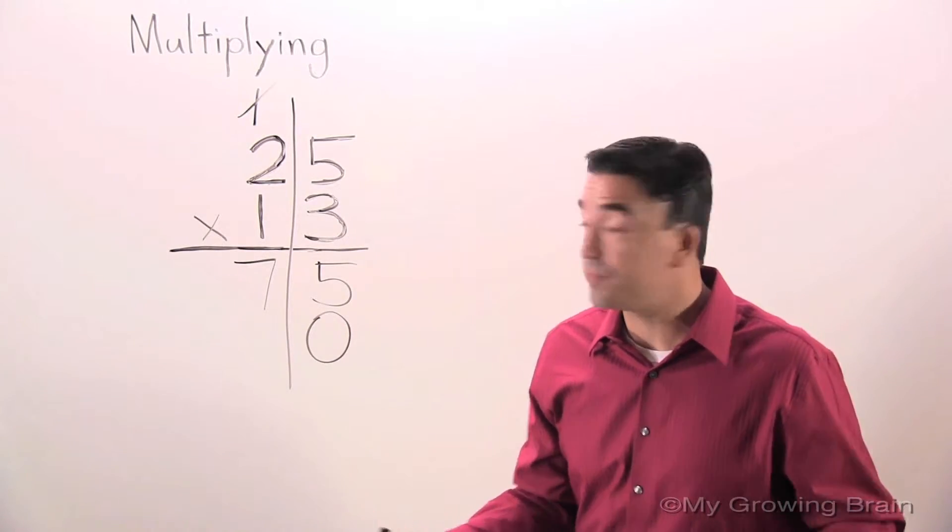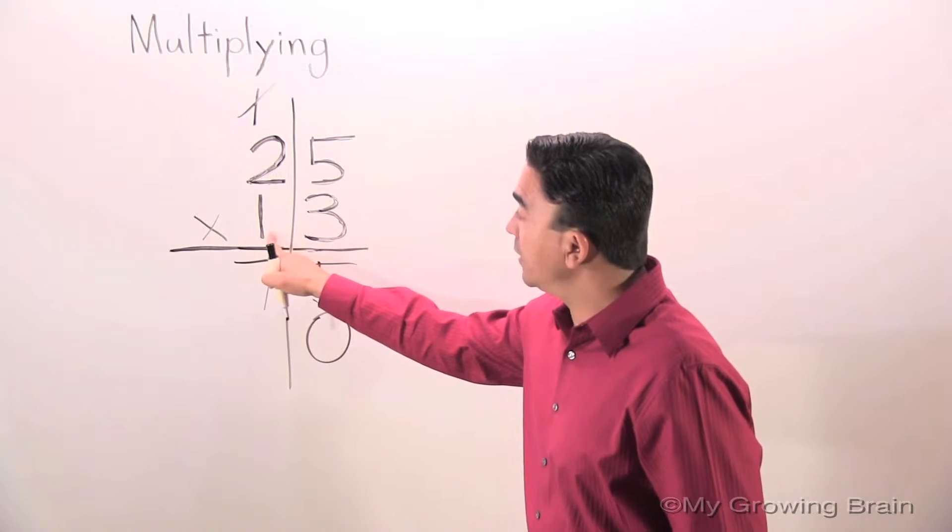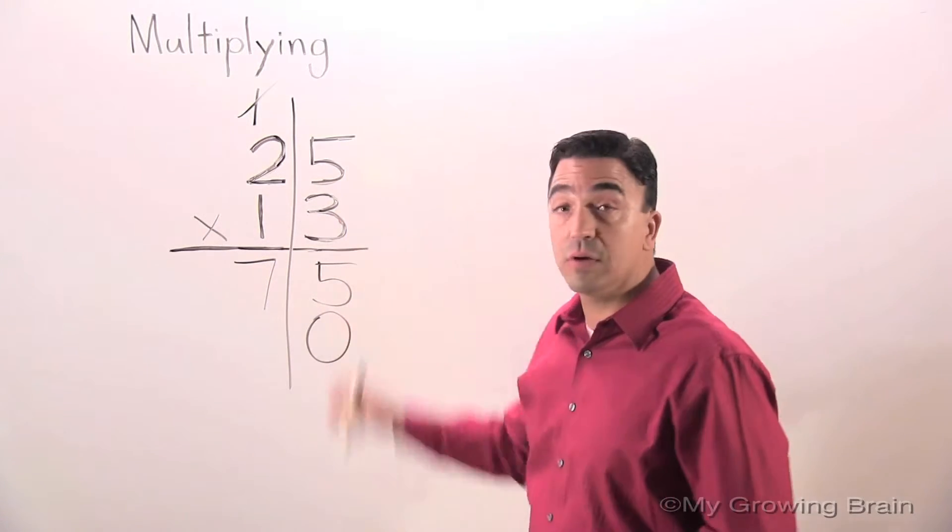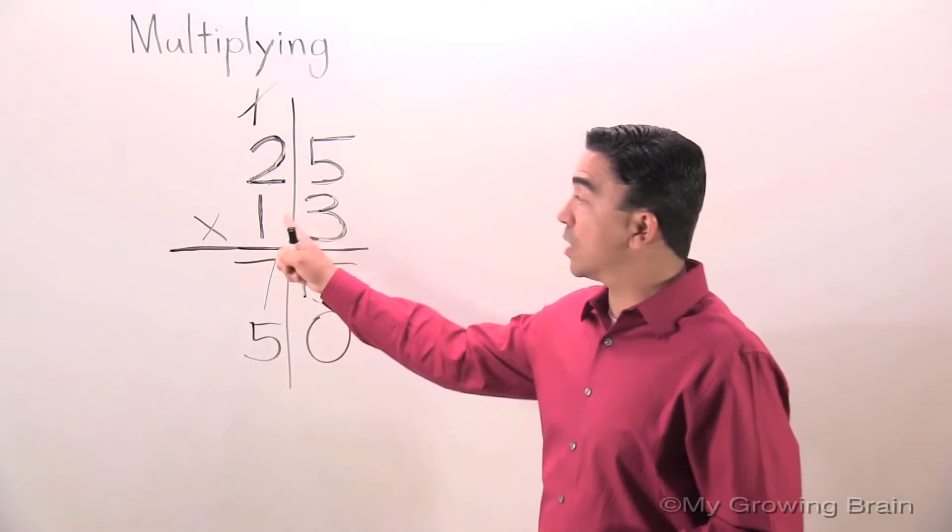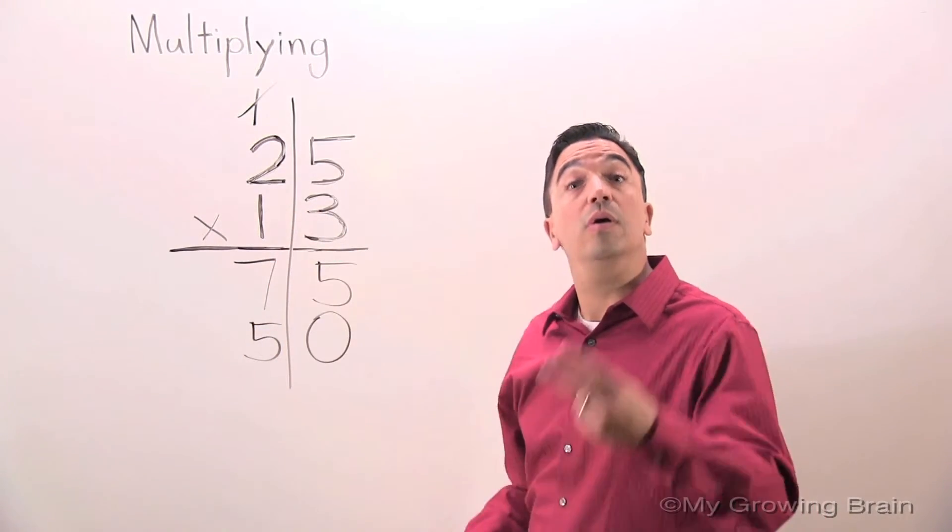Now we're ready to multiply. We're going to multiply one times five, which is five. We're going to multiply one times two, which is two.